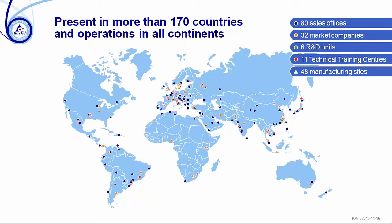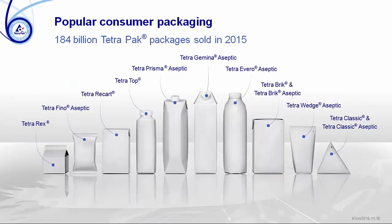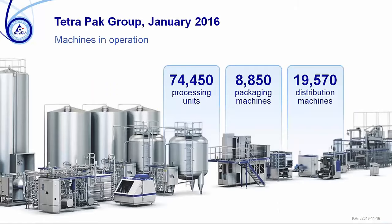We specialize in providing customers with complete solutions for the processing, packaging, and distribution of food products. Our mission statement is: we commit to making food safe and available everywhere. Since we provide packaging for mostly liquid products, we measure our success in the number of sold packages — a steadily growing volume. Last year we sold 184 billion packages around the world in a big range of sizes. Our installed base includes almost 75,000 processing units, almost 9,000 packaging machines, and 20,000 distribution machines.